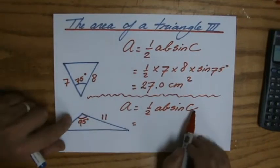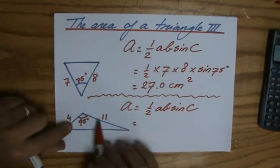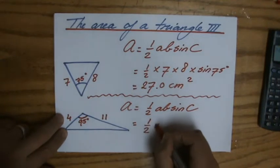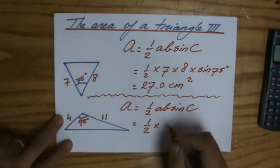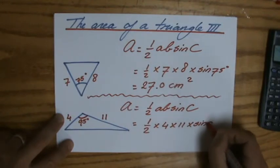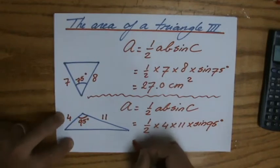A and B are lengths, and that angle must be between them. I don't have to do any special extra moves. It is half times four times 11 times the sine of 95 degrees,